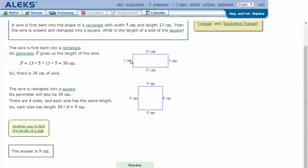With a width of 5, this side is 5 and so is this one. With a length of 13, if this side is 13, so is this side. 13 plus 5 plus 13 plus 5 is 36. So there's 36 centimeters of wire.